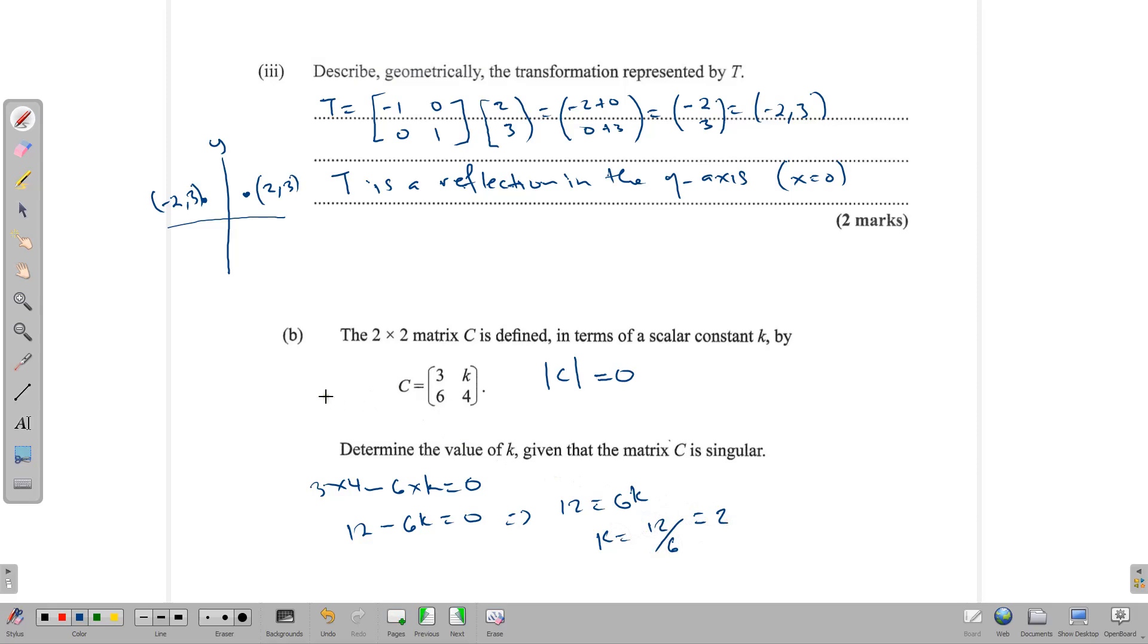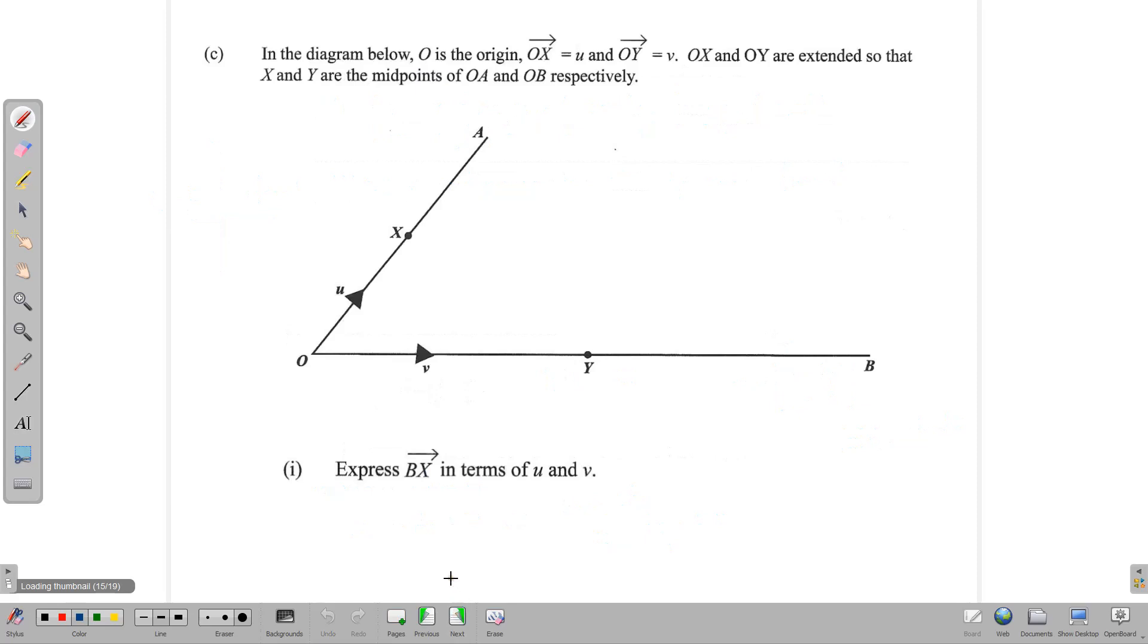Because of that, we have 12 equals 6K, and therefore K is equal to 12 over 6, which is equal to 2. Remember, the determinant of a matrix A which is equal to A B, C D, the determinant is equal to AD minus BC. So that's what we did here: multiply these two minus the product of those two. Because it is singular, we know the determinant should be 0, so we pretty much just do that and we got our answer there.